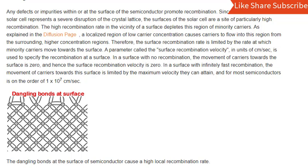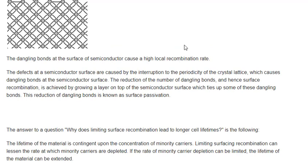The dangling bonds at the surface of a semiconductor cause a high local recombination rate. The defects at a semiconductor surface are caused by the interruption to the periodicity of the crystal lattice, which causes dangling bonds at the semiconductor surface. The reduction of the number of dangling bonds, and hence surface recombination, is achieved by growing a layer on top of the semiconductor surface which ties up some of these dangling bonds. This reduction of dangling bonds is known as surface passivation.